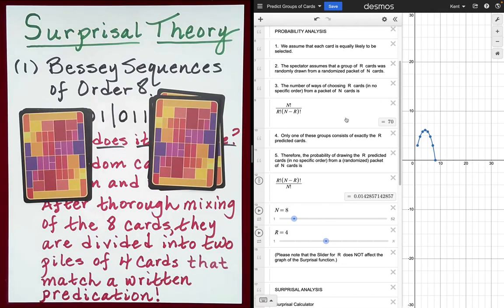So that means, in particular, if we correctly guess the composition of one of two of these piles of four cards each, there is a 1 divided by 70 probability that we would be successful in our guess or prediction. So very small.